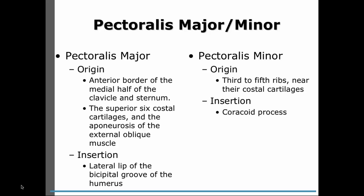The origin of pectoralis major is usually the medial half of the clavicle and sternum, and the insertion goes to the humerus at the bicipital groove. Pectoralis minor originates from the ribs — the third to fifth ribs — and its insertion is the coracoid process.